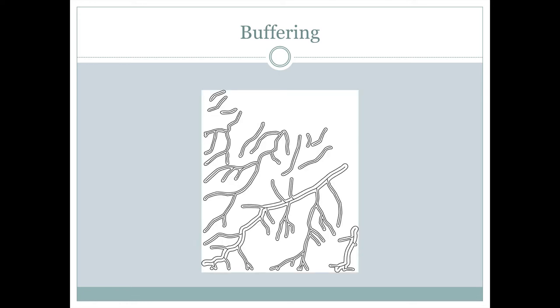Here's an example of a variable width buffer. We can see that there's definitely two different buffer distances, one here for some of the streams, which is fairly narrow, and then the main streams here are getting a much wider buffer associated with them.